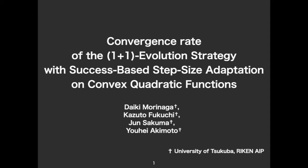Hello, I'm Daiki Morinaga from University of Tsukuba and Riken AIP. Today I talk on the (1+1) evolution strategy, which is a continuous black box optimization algorithm, and show its convergence rate on a general convex quadratic function.